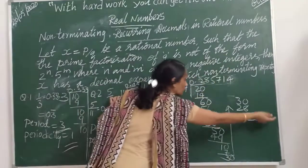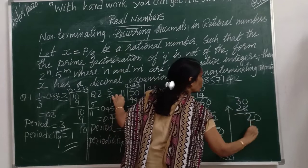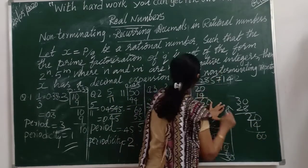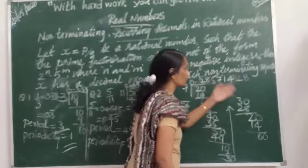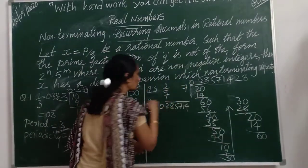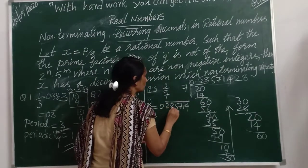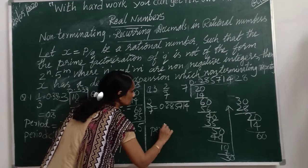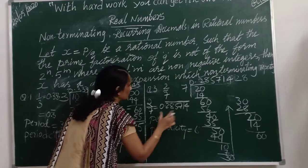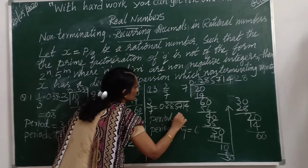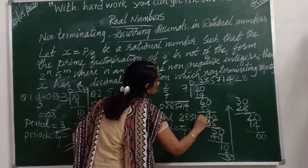The same digits will be coming after that — you can verify it. Since these digits are repeating, we put a bar above them. So counting the digits: 1, 2, 3, 4, 5, 6 — the periodicity is 6 and the period is this block: 2, 8, 5, 7, 1, 4.